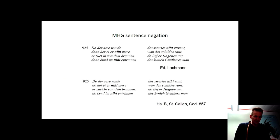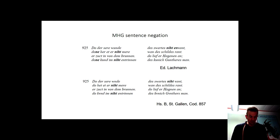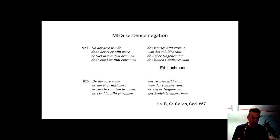For example, stanza 925 of manuscript A of the Nibelungenlied appears in Karl Lachmann's edition with three discontinuous sentence negations: 'dô der sêr wunde des wertes nicht en fand' (1), 'dô ne tet er nicht' (2), 'mêr wand des Schildes rannt er zuckt ihn von dem Brunnen, dô lief er haggenden an, dô ne kund ihm nicht entrinnen des künig Gunteres man' (3). A comparison with manuscript B, stanza 981, shows however that the passage in question occurs without any negative clitics and the sentence negation is expressed by simple negators, consistently nicht, as in the modern language.